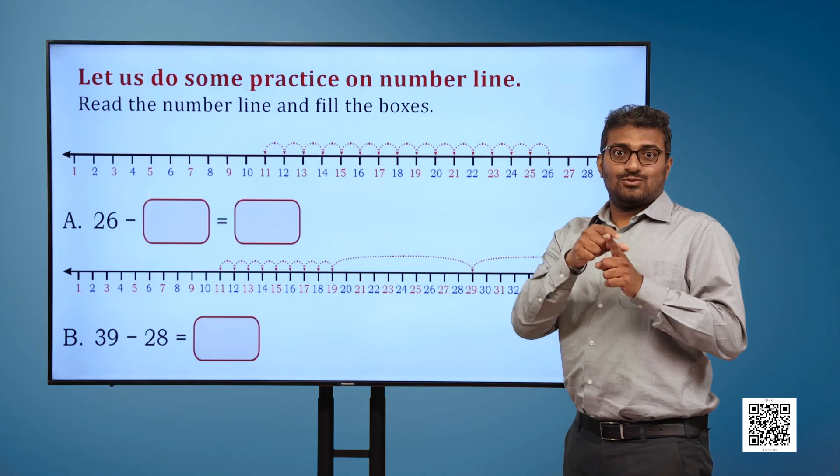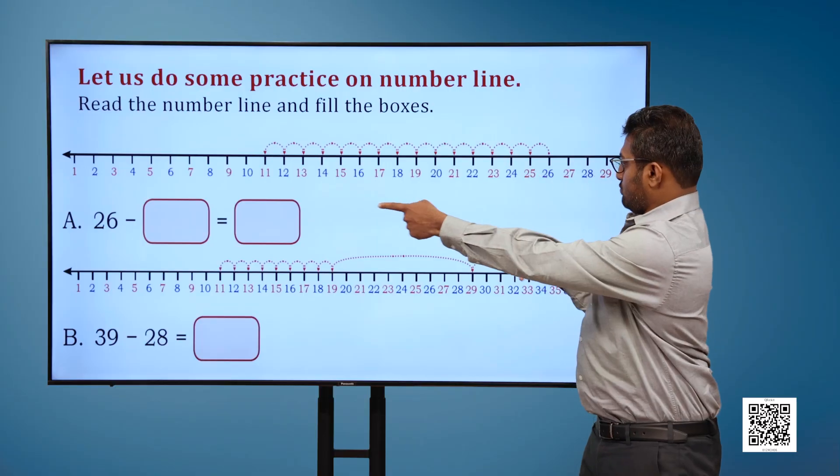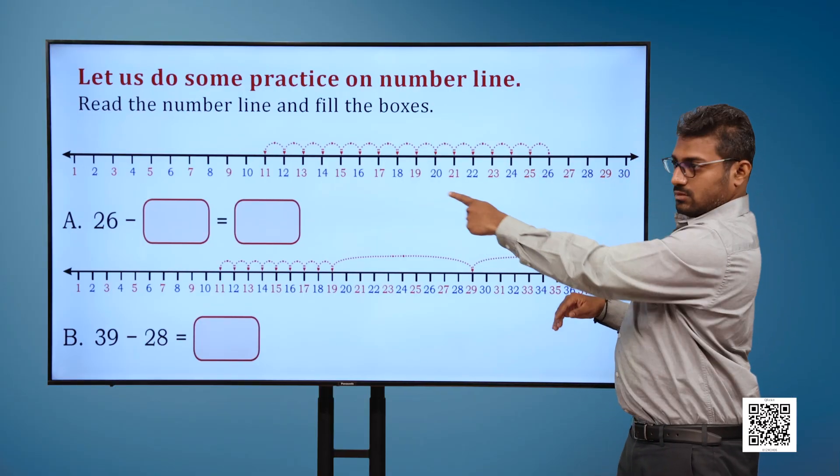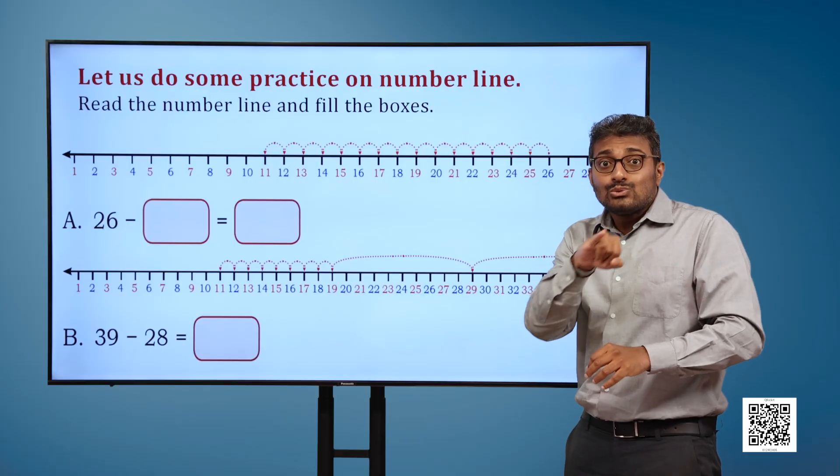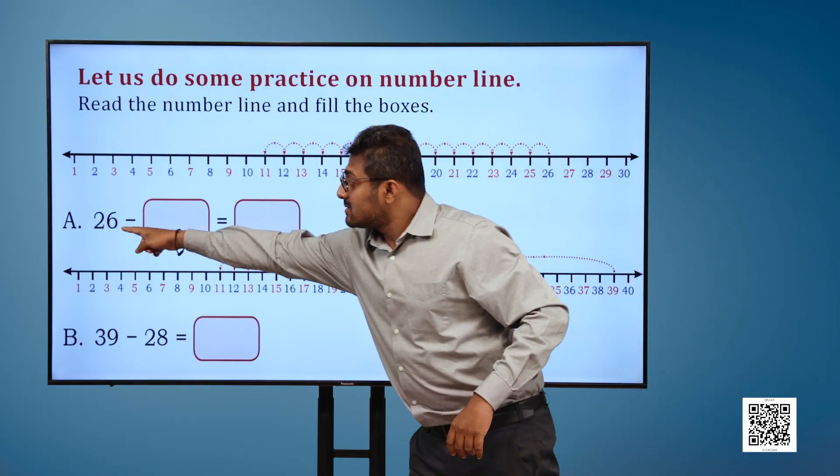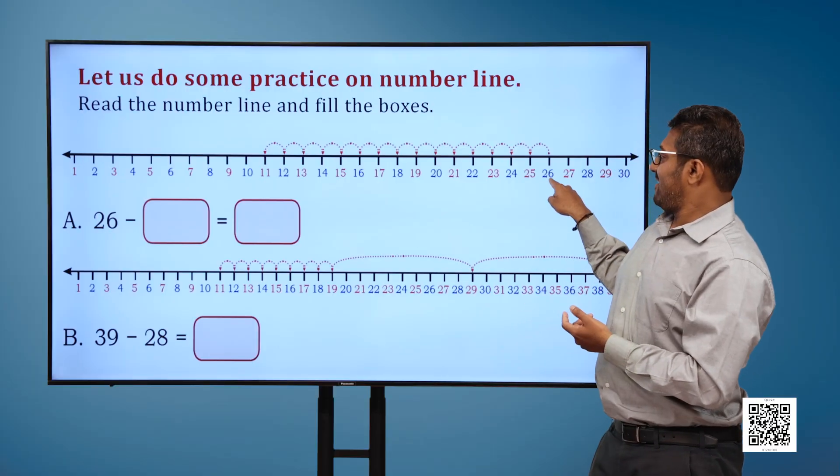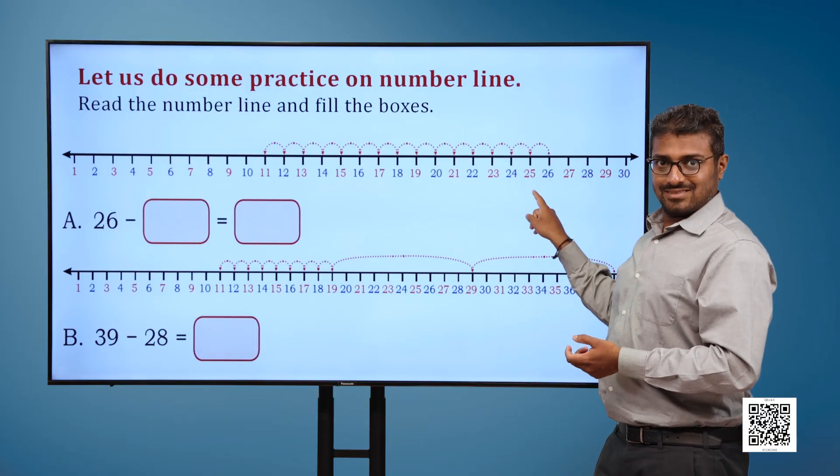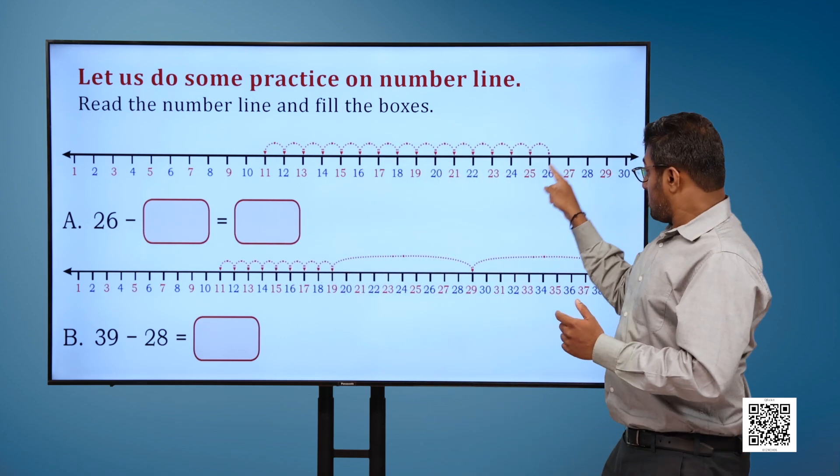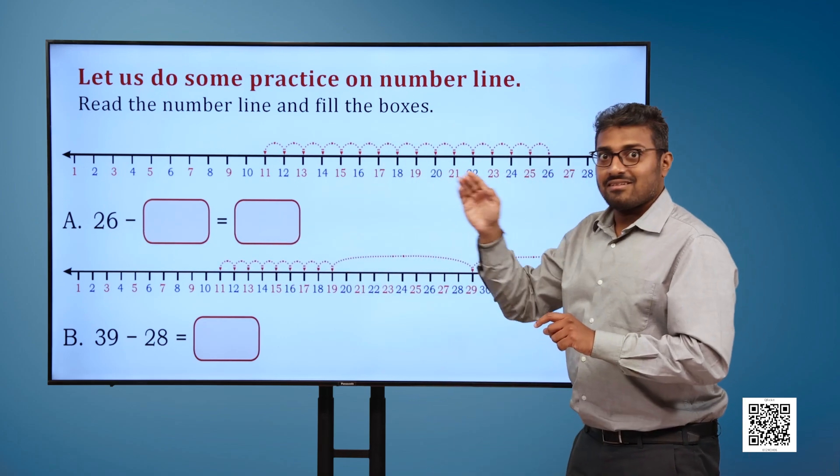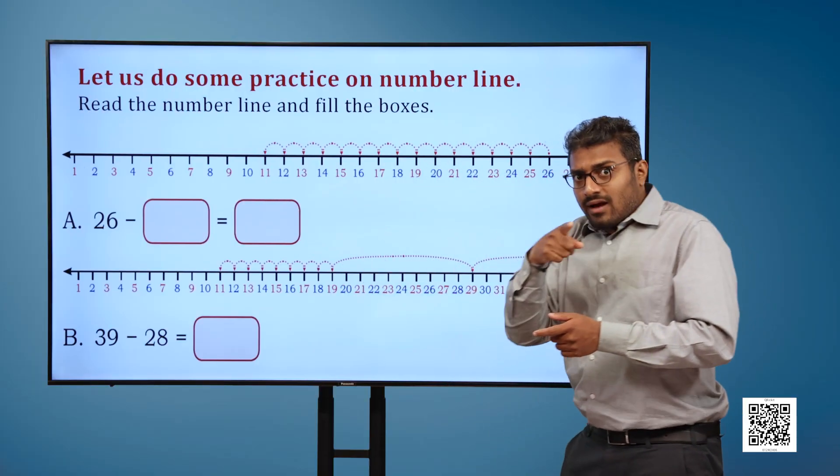Let us do some practice on number line. Read the number line and fill the boxes. Now we have the number line for you. It starts with number 1 and ends at 30. A. 26 minus blank is equal to blank. If we go 15 ones back from 26, we will arrive at a certain number.